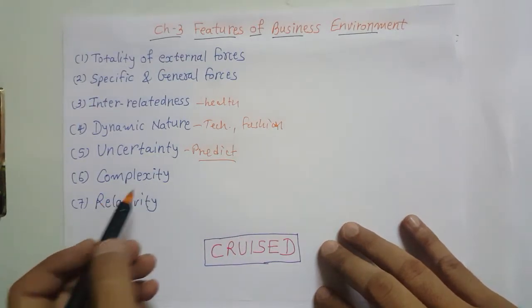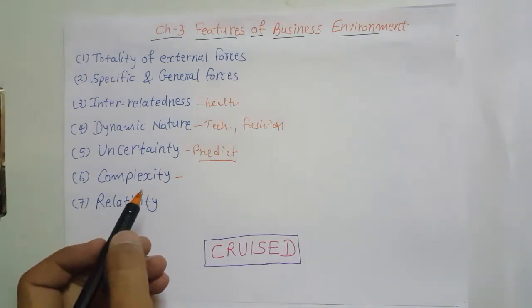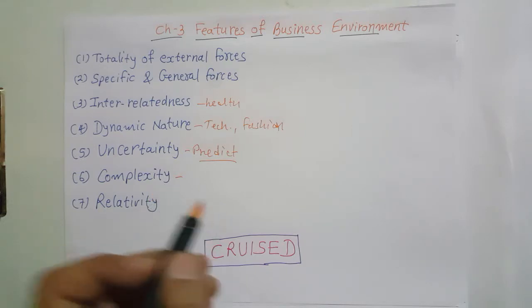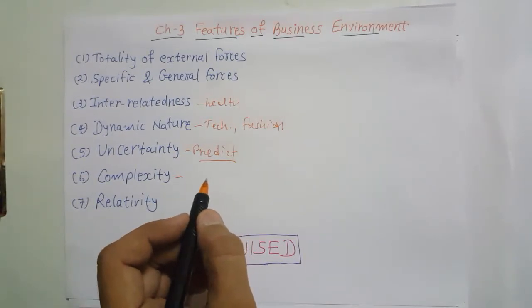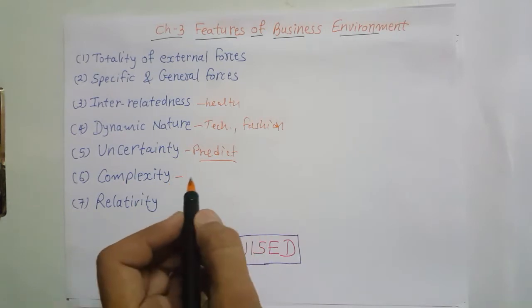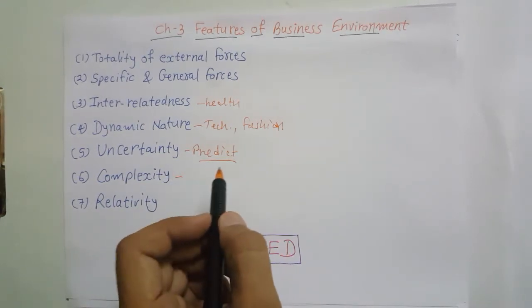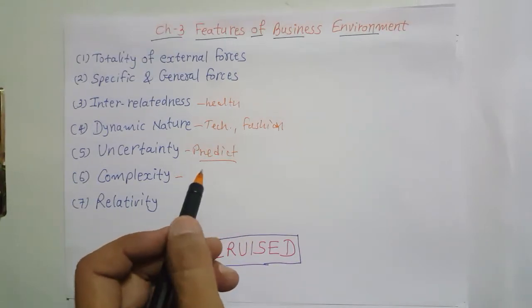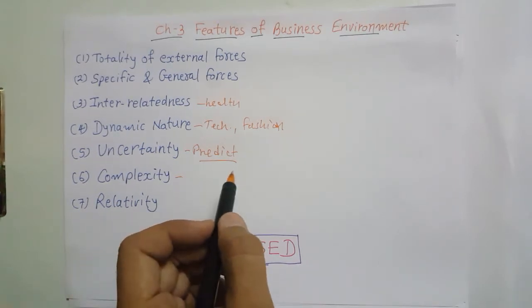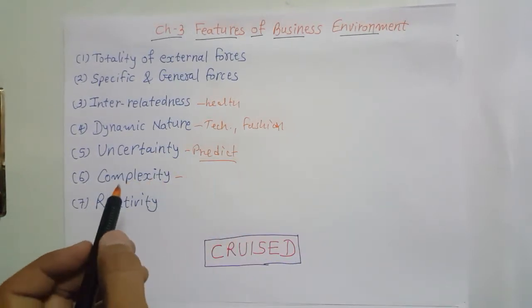The sixth feature is complexity. Business environment is very difficult to understand because there are many forces constituting it. Separately, you can understand that government changed a policy, consumers changed their preference, or interest rates are changing, or a new social trend is coming. But when we ask what the overall impact on our business will be, it is not easy to understand — that's why it is called complex.